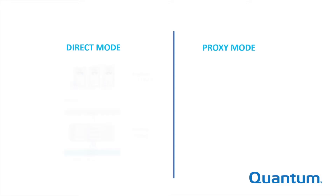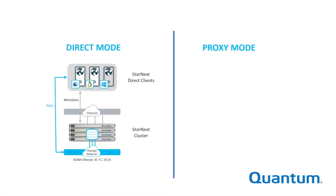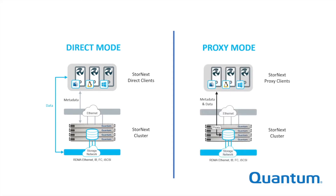The difference is in how a client connects to the shared storage. For data traffic, direct mode clients connect directly to the backend storage network, while metadata communication happens over standard Ethernet. Proxy mode clients connect to the storage over Ethernet through a proxy service, but use a custom network protocol that's much more efficient than NAS, especially for large files and streaming. As with direct clients, metadata for proxy clients also flows over the LAN.